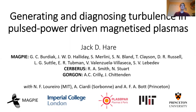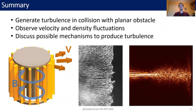Just to summarize briefly what I'm going to show you in this talk: we've been able to generate turbulence by colliding a magnetized plasma with a planar obstacle. We observe velocity and density fluctuations using Thomson scattering and using a new diagnostic that we call an imaging refractometer. As well as presenting results from all of these diagnostics, I'll also discuss some possible mechanisms which can produce the turbulence which we observe.